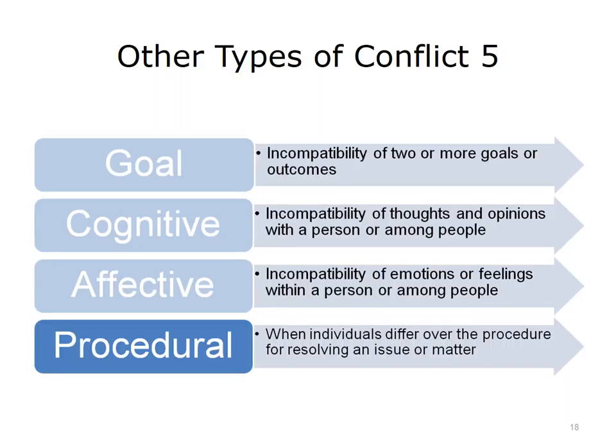The last type of conflict on this list, procedural conflict, occurs when individuals differ over the procedure for resolving an issue or carrying out an assignment. An example of this would be when one team member immediately involves the team leader to resolve all disputes, while another prefers team members to resolve their own conflicts and only wants the leader involved if the team members cannot agree.